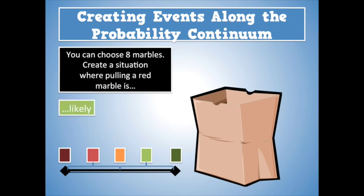What about a situation where pulling a red is likely? Well, in this case, make sure the red ones outnumber the non-red ones. So in this case, I have seven red ones, one blue one. So pulling a red one is extremely likely, very likely, but not certain, as you could still pull the blue.